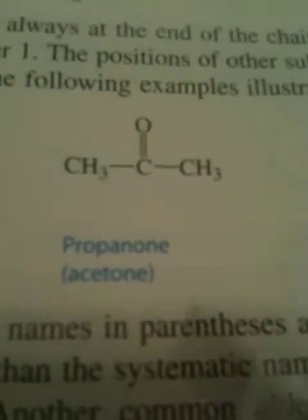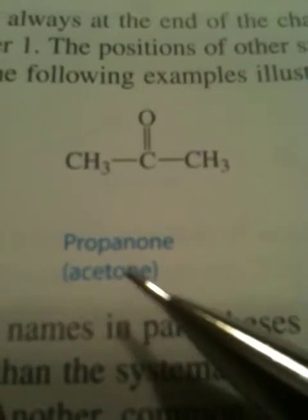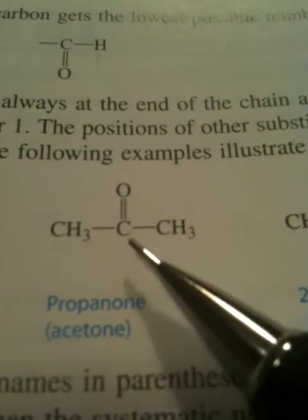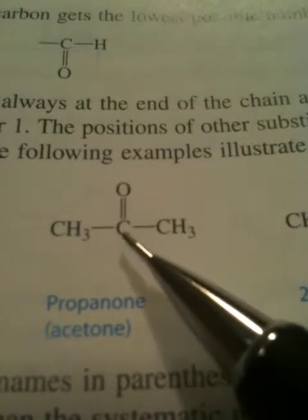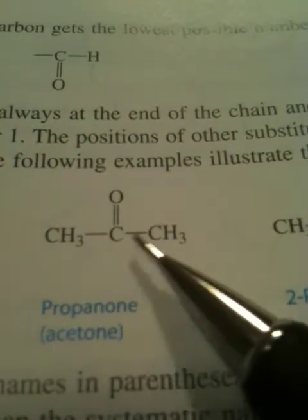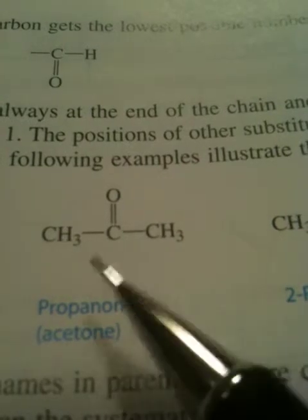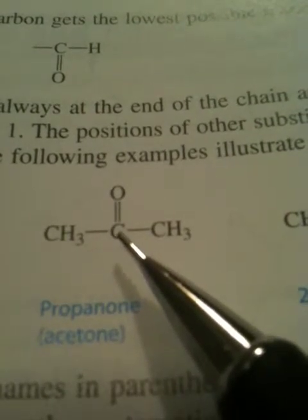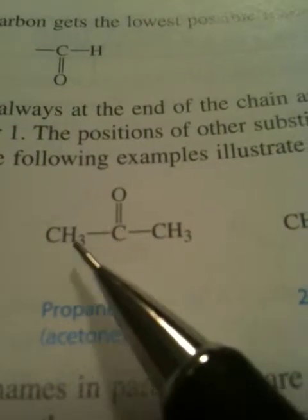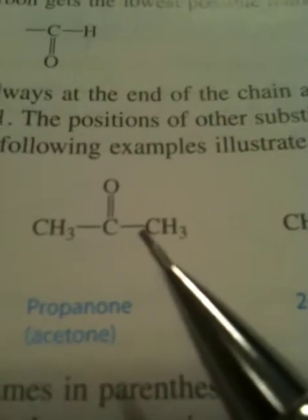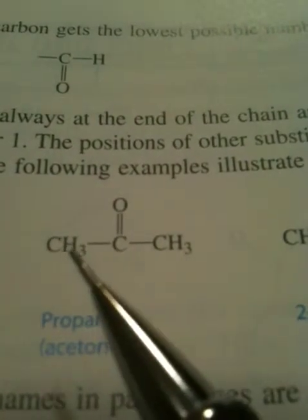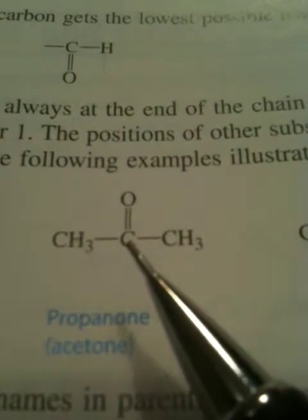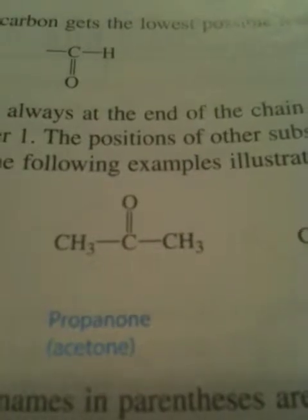Let's go to propanone, which is also known as acetone. Ladies, this is what you take your fingernail polish off with. This is not an aldehyde this time — why? Because the carbonyl group, the carbon-oxygen combination, is in the center of the molecule. It's three carbons long, so this is propanone. On a three-carbon chain we can only have one position for the ketone, so we just call this propanone. Another way to name it is dimethylketone — these two groups are each methyls on the central carbon, so it's dimethylketone. Just another way to name it.